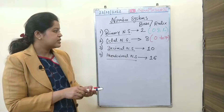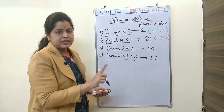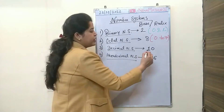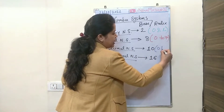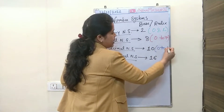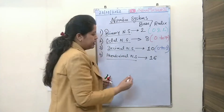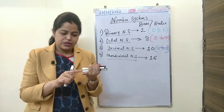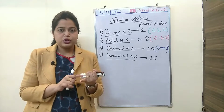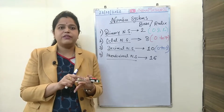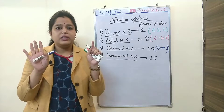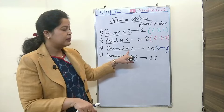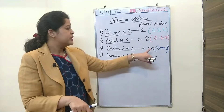The next one is decimal number system, and for decimal number system the base is ten. That means we have the option to represent our information starting from zero and ending at nine. So we have total ten digits — zero, one, two, three, four, five, six, seven, eight, and nine — to represent our information in the form of decimal number system having base ten.